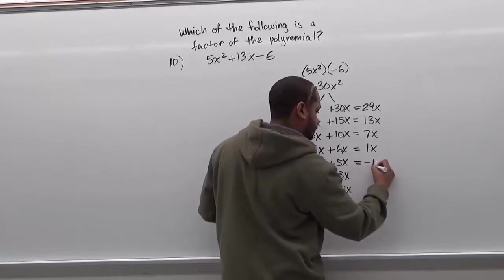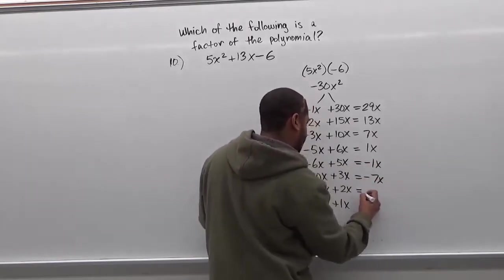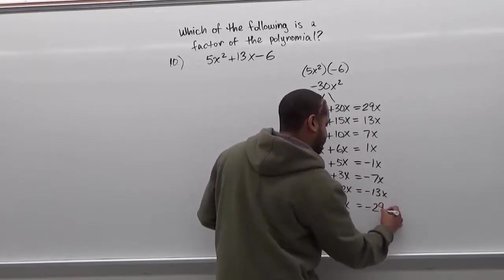So here we're going to have negative 1x, here we have negative 7x, followed by negative 13x, and finally negative 29x.